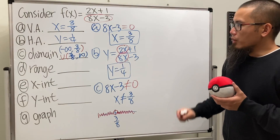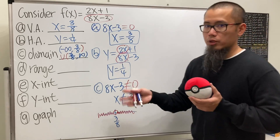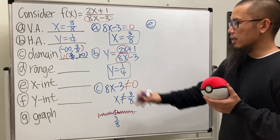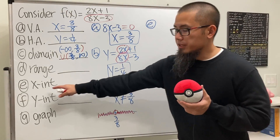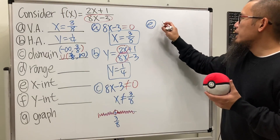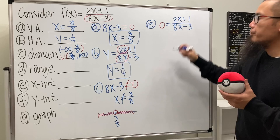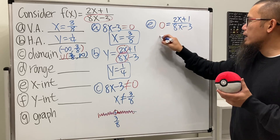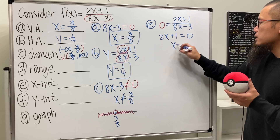For the range, we'll save that until the end since it's the trickiest. For the x-intercept, we make y equal zero: 0 equals (2x + 1) over (8x - 3). If a fraction equals zero, the numerator must be zero. So we solve 2x + 1 equals zero and get x equals negative 1 over 2.